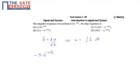Coming to option B, the derivative gives 50e^(-10t), so option B is also incorrect.